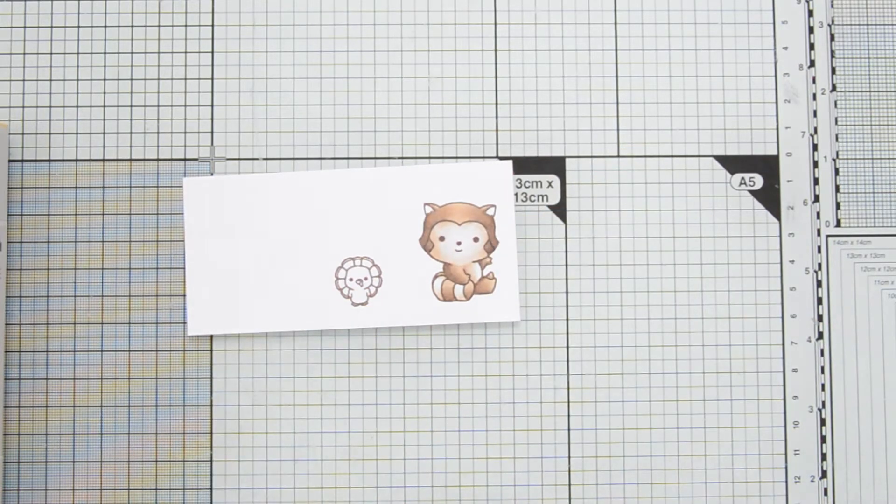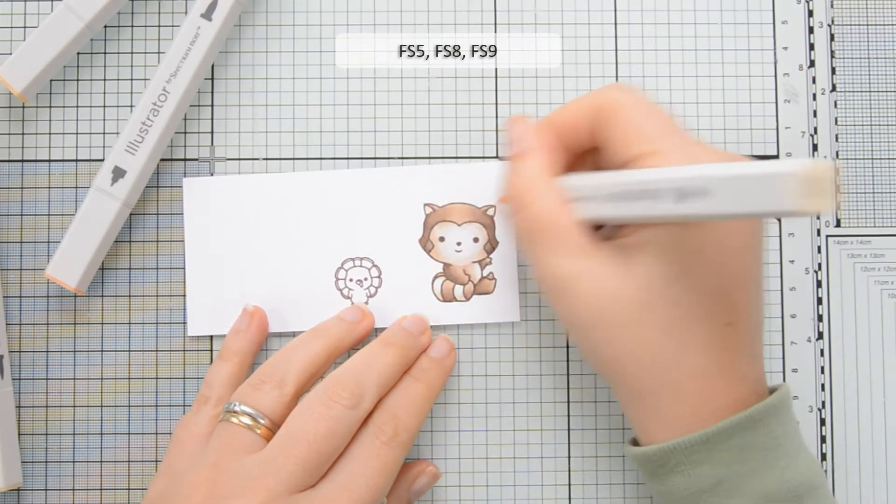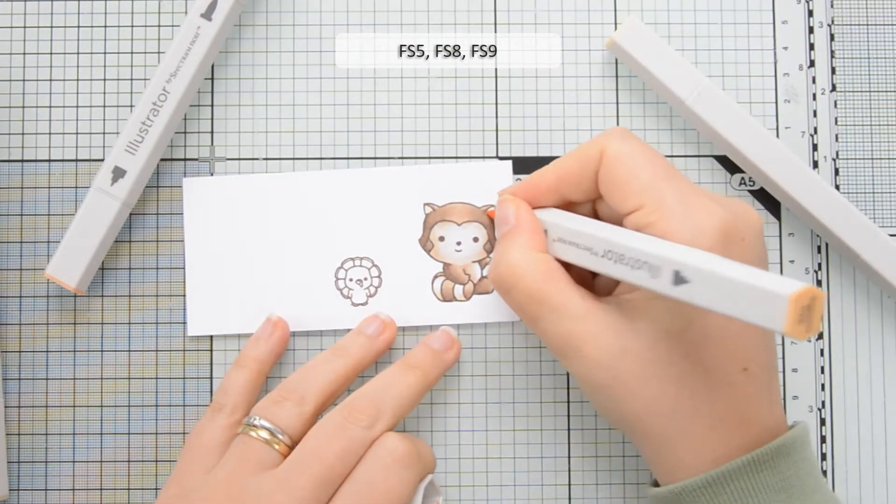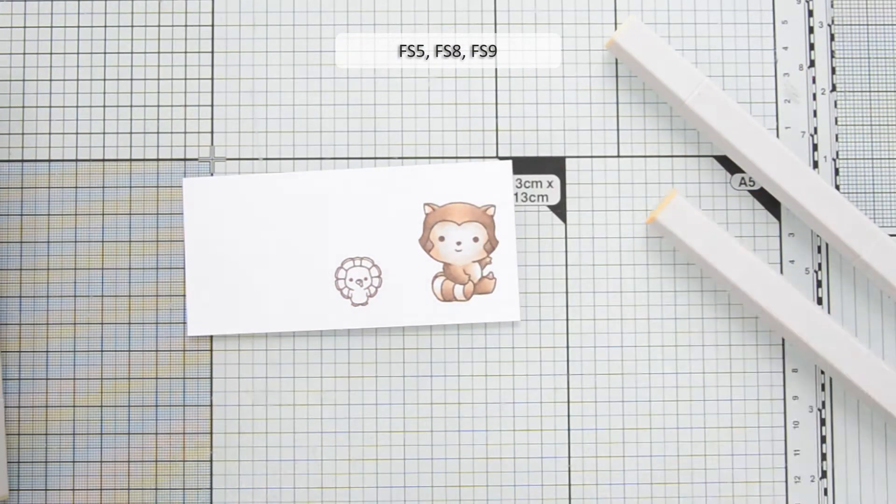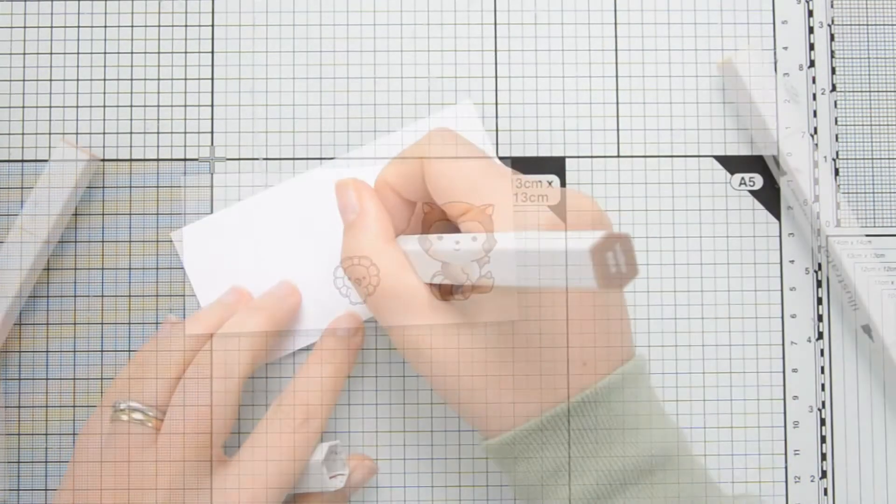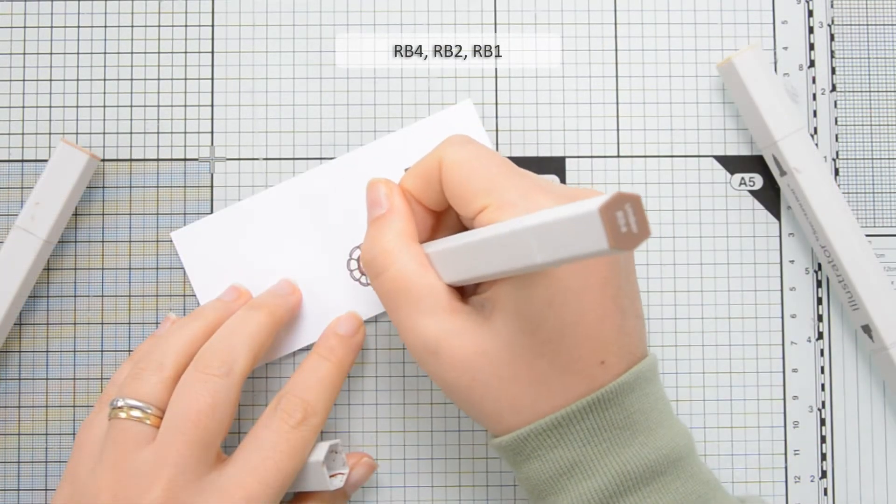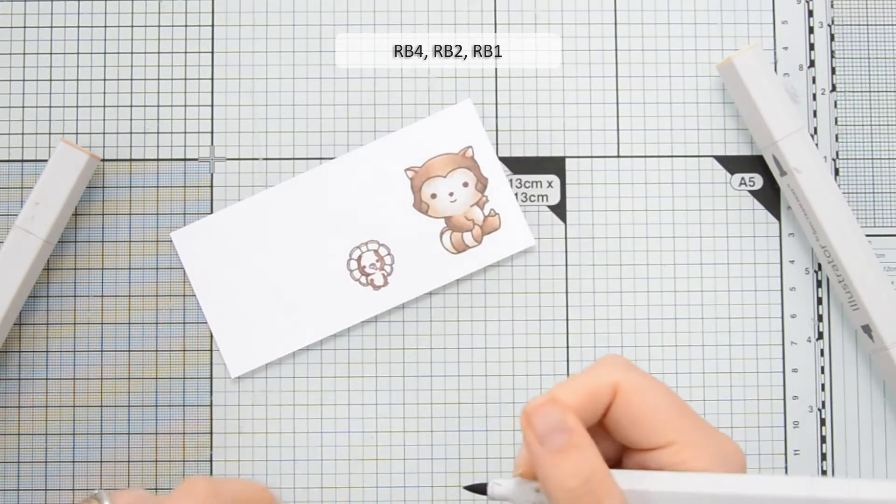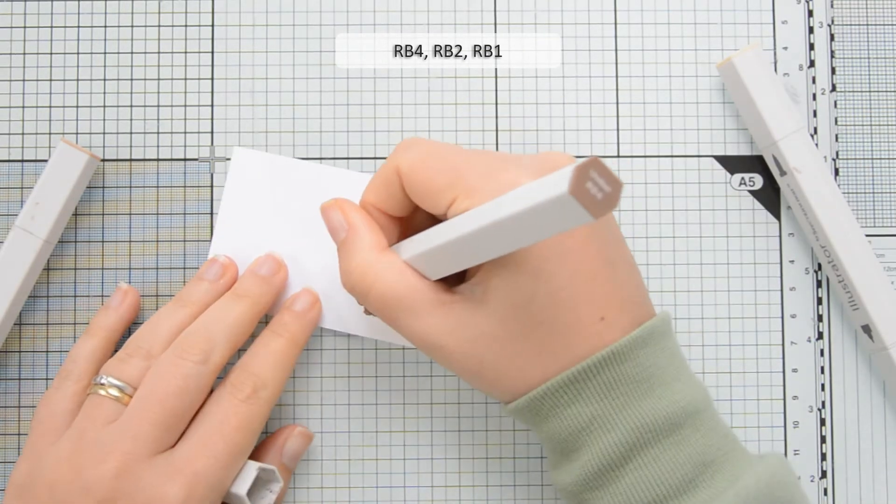For those areas on the side of his cheeks I used EB4 and MB4 and then I am going to use some skin tones for the inside of the ears. These are FS5, FS8 and FS9 and later on I'll be using FS5 also to color in his cheeks.